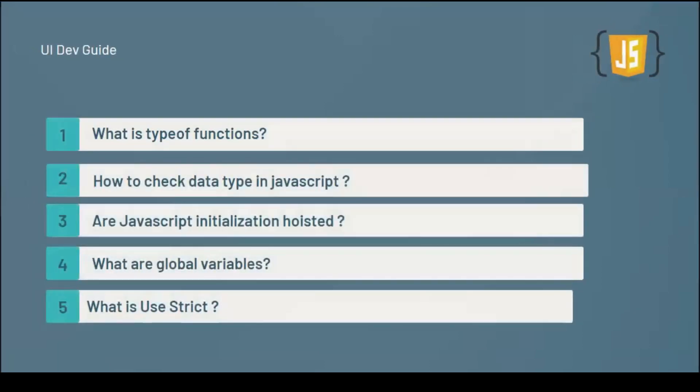The first question is: what is the type of a function? When you create a function in JavaScript and try to print its type, you'll get something specific about function types. The second question is: how do you check the data type of a variable in JavaScript? The answer is using the typeof operator.